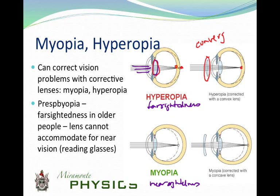Conversely, with myopia your lens is focusing too far in front of the retina, and you want to move that focus back onto the retina. To spread out those rays a little, you put a diverging lens out front. The diverging lens — thicker on the outside than in the middle — causes rays coming in from far away to spread out a little. They're then refracted by the cornea and the eye's lens and land on the retina, correcting your vision.